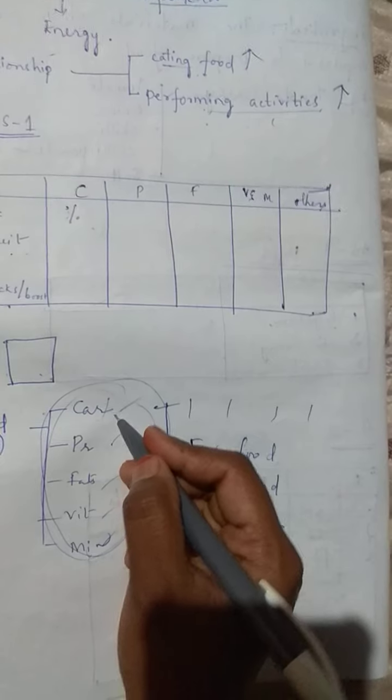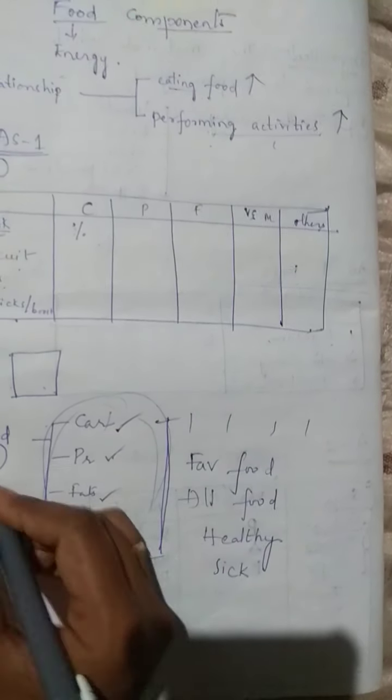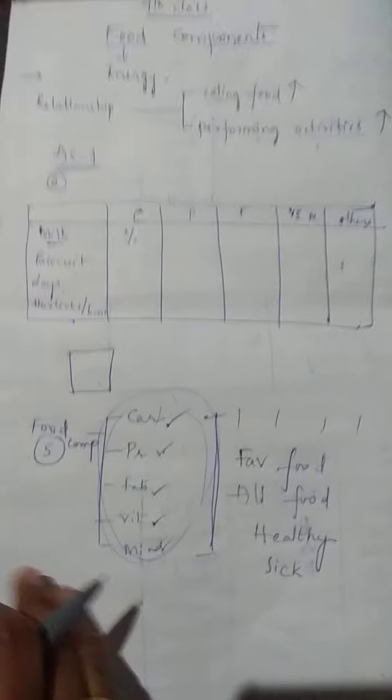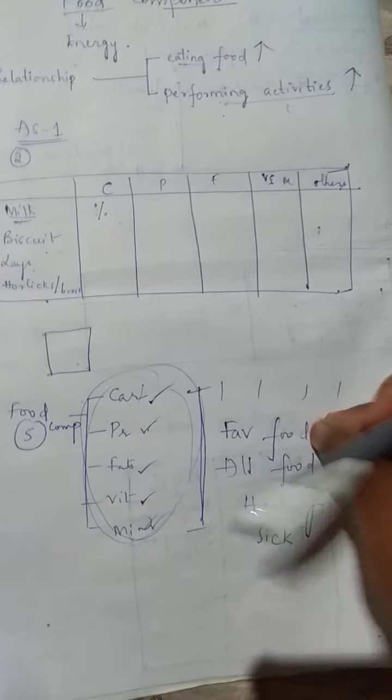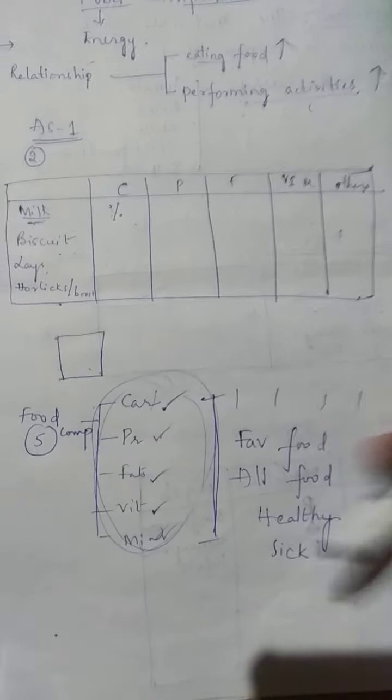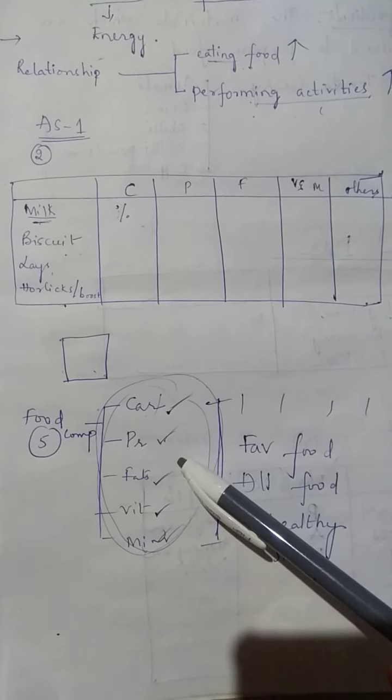What are all these? Carbohydrates, proteins, fats, vitamins and minerals. All these are food components. They are present in our food, in all foods, not just in your favorite food. Your favorite food may have only carbohydrates or only proteins.